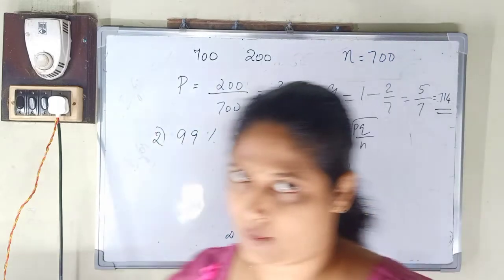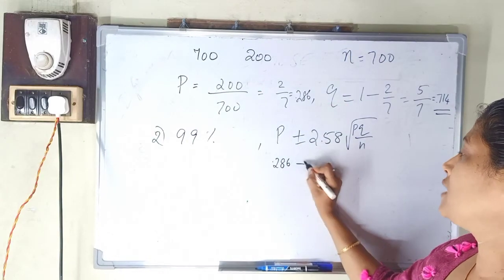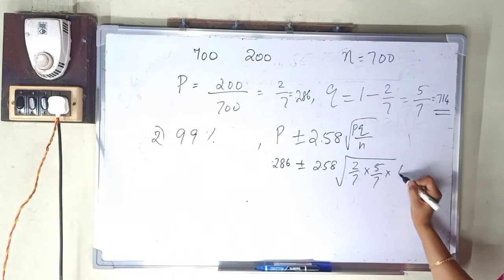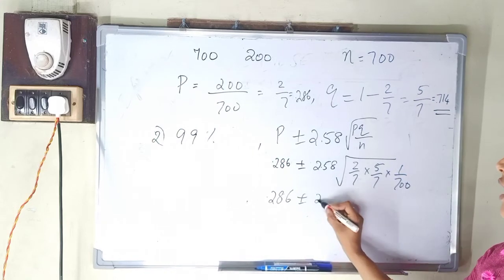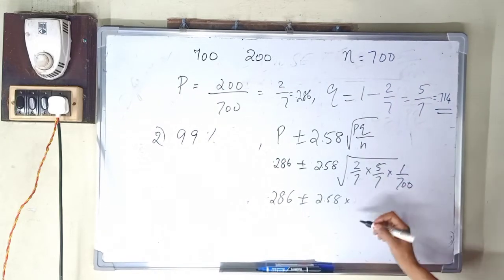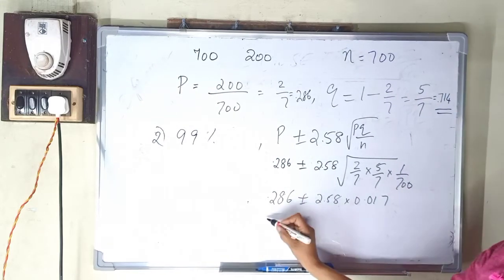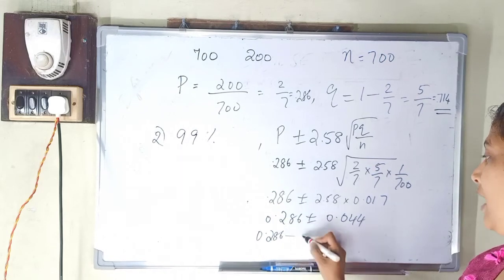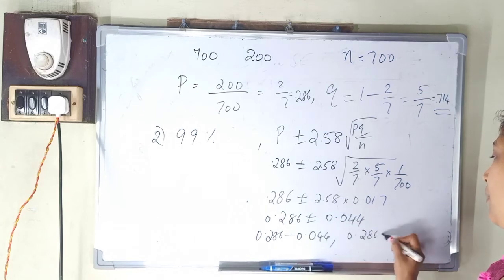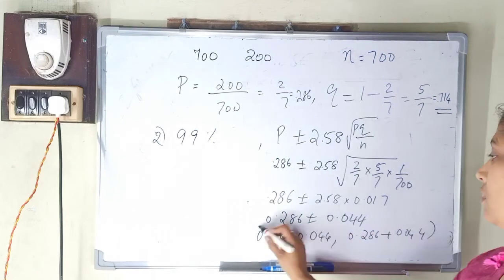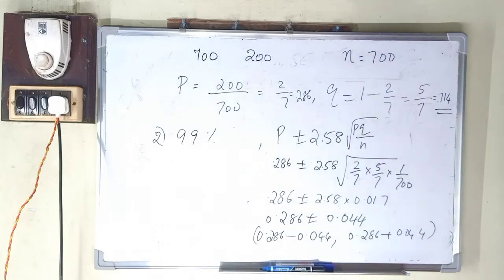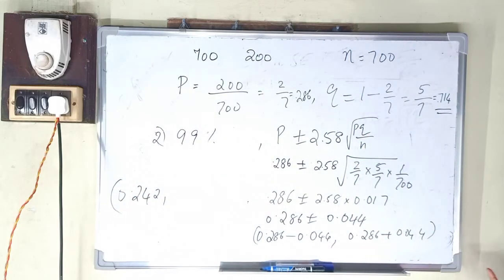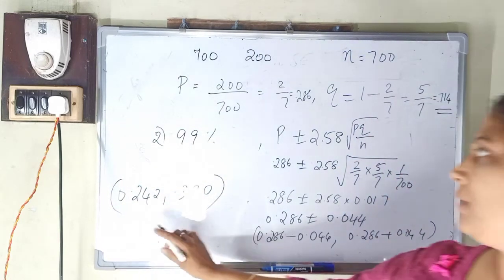For 99% confidence: P = 0.286, and we compute 2 by 7 times 5 by 7 divided by 700 under the root. The standard error is 0.017. So the interval is 0.286 plus or minus 2.58 times 0.017, giving 0.286 plus or minus 0.044. The 99% confidence interval is from 0.242 to 0.330.